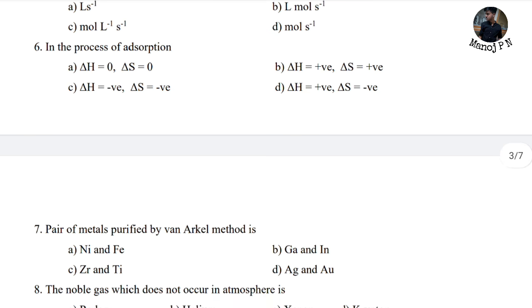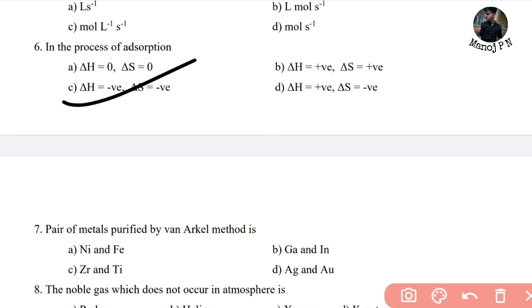In the process of adsorption — adsorption is basically delta H negative, delta S negative, delta G negative. Option C is your answer.